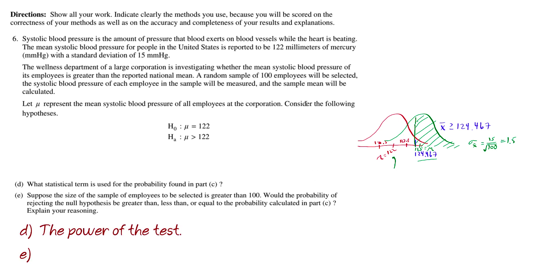Lastly, part E. Suppose the sample size of the employees is greater than 100, which means n is increasing. What you know about sampling distributions, as n increases, the standard deviation, remember here's our formula, it's over the square root of n. Now as this number gets bigger, the whole standard deviation gets smaller, which means there's not as much sampling variation, which means these curves get taller.